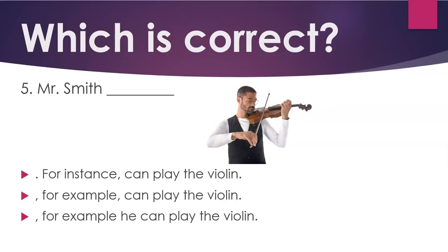Number five: Mr. Smith — period — for instance, can play the violin. Comma — for example, can play the violin. Comma — for example, he can play the violin.